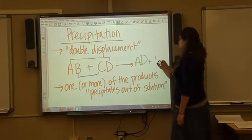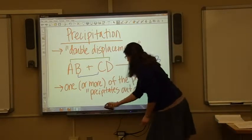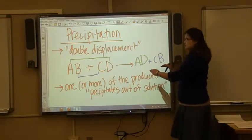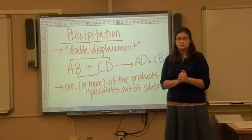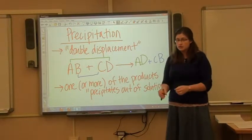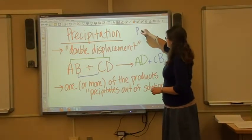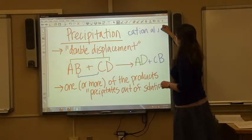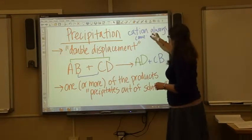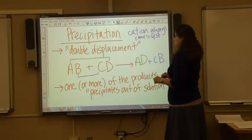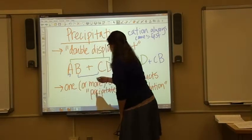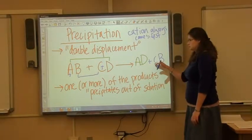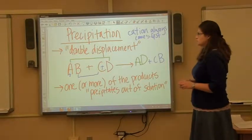The best way of describing how to make compounds is by taking the outside two species and combining them, and then taking the inside two species and combining them. You'll produce two completely new compounds. Remember that the positive ion always comes first, so A must come first in compound AD, and C comes first in the other compound.